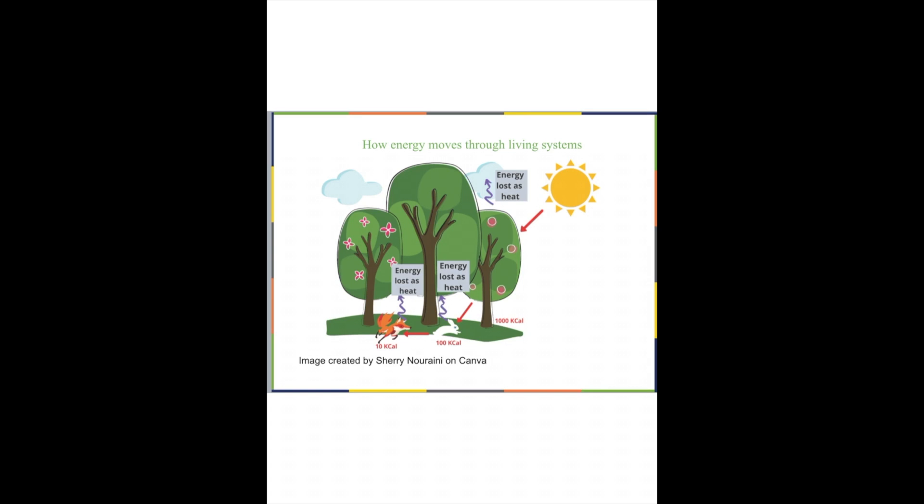Then this rabbit is going to be eaten by a fox, and the story is the same. The energy that is stored here, some of it is stored within the body of the fox, some of it is used to fuel the movement and whatever the fox is supposed to do in its body. And during that process of transformation, some of the energy is lost as heat. So you can see we get energy from the sun going into the system and keeps being converted from one form to another. And every time energy transforms from one form to another, we get some of it lost as heat.